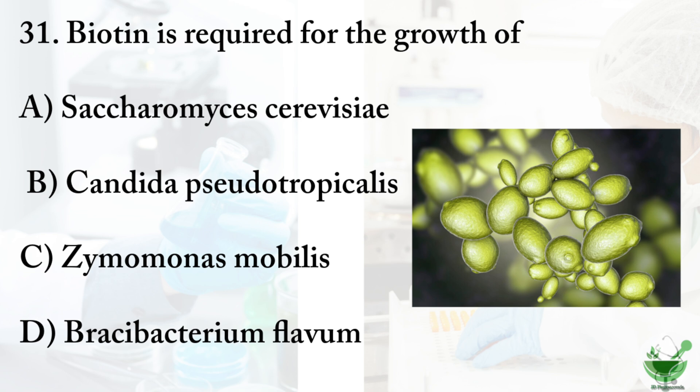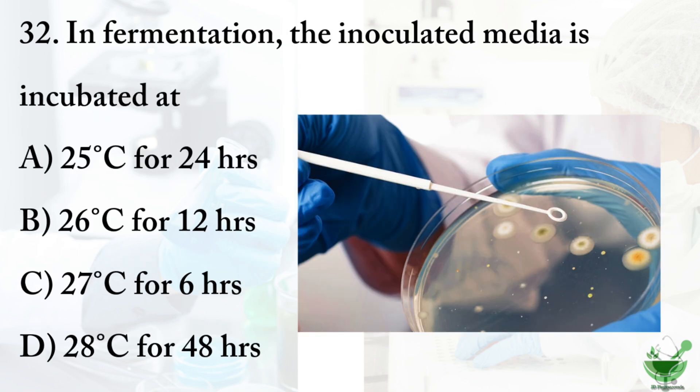Question 31: Biotin is required for the growth of — option A: Saccharomyces cerevisiae, option B: Candida pseudotropicals, option C: Simomonas mobilis, option D: Brassybacterium flavum. The correct option is A, Saccharomyces cerevisiae. Biotin, also known as vitamin B7 or vitamin H, is one of the B vitamins involved in a wide range of metabolic processes related to utilization of fats, carbohydrates, and amino acids.